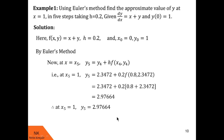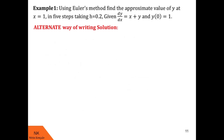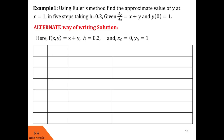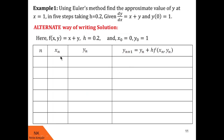Now let me show you an alternate way of writing the same solution. We will put all the calculated values in a tabular format so it is easier to read. The column headings of this table will be n, xn, yn, and yn+1. The yn+1 formula by Euler's method is: yn+1 = yn + h·f(xn, yn).